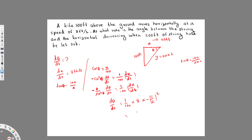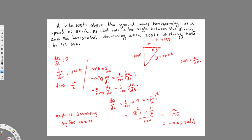So we get: 8 × (−1/4) / 100 = −2/100 = −0.02. Therefore, dθ/dt = −0.02 radians per second. The negative sign confirms the angle is decreasing at a rate of 0.02 radians per second. That's the final answer!